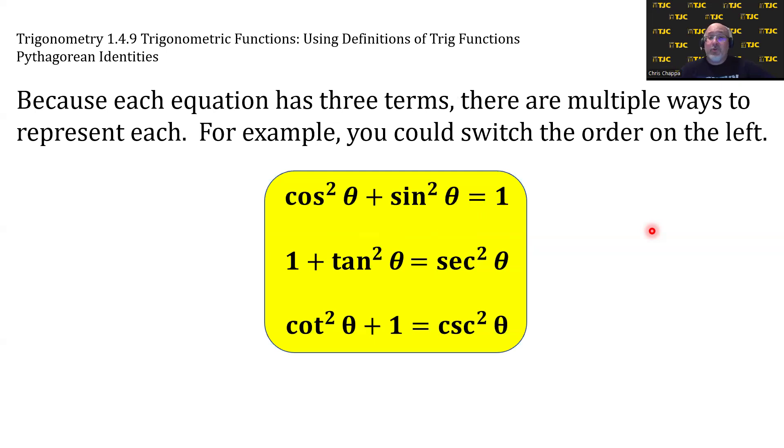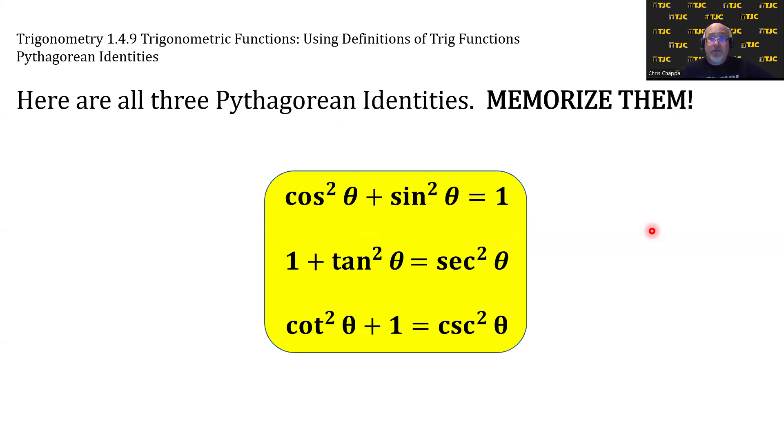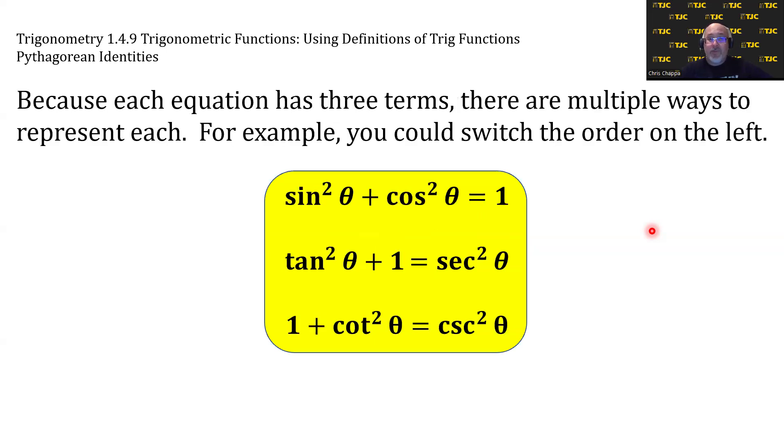For example, you could switch the order on the left. Watch the left side of each equation. Wrong way. There we go. Because addition is commutative, the order is irrelevant on the left side.